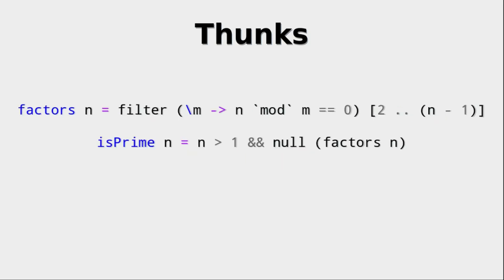So another great example of thunks and where they're useful is this factors function and the isPrime function. Since everything here is lazy, we never build the whole list of factors for the test for a prime. What we actually do is we check every single factor there is in the number we're checking and once we have found one that is divisible,